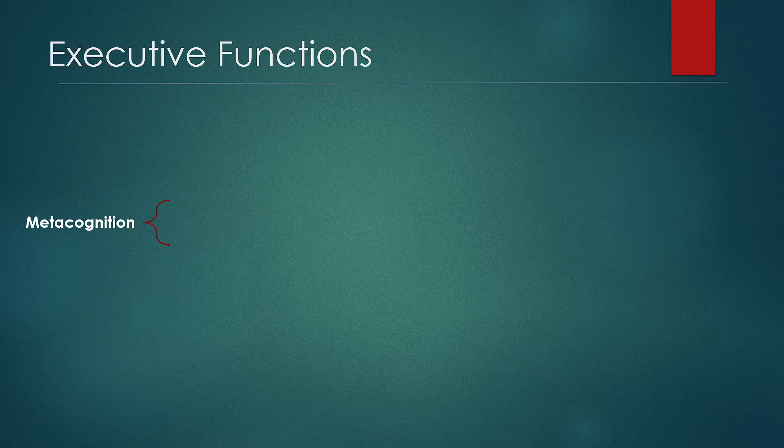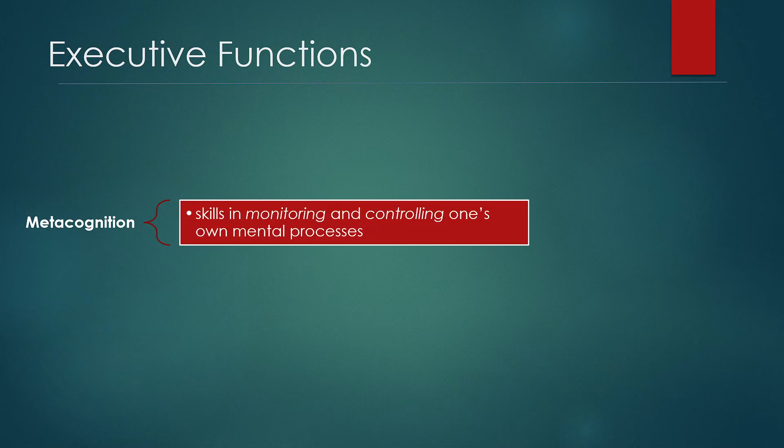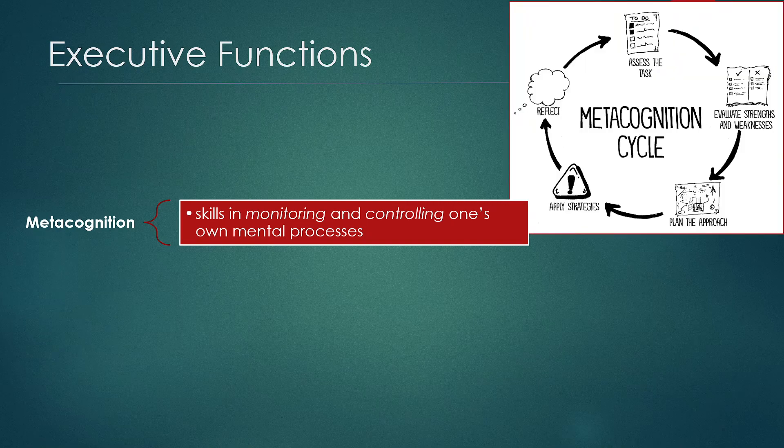So what we're talking about is executive functions. You may have heard the term metacognition. That term refers to the skills that you have in monitoring and controlling your own mental processes. So metacognition is your awareness of these processes that you're going through. Here's a little cycle: you have to assess the task, think about the strengths and the weaknesses that you may have in your understanding or your ability to think about that task.